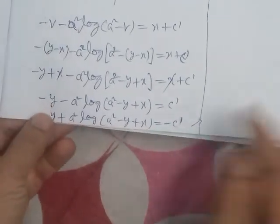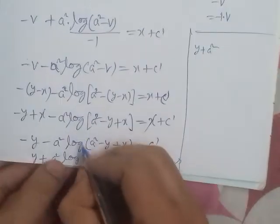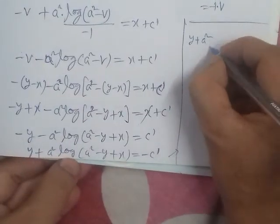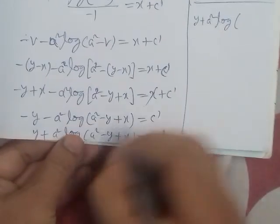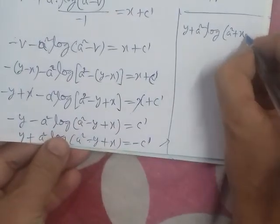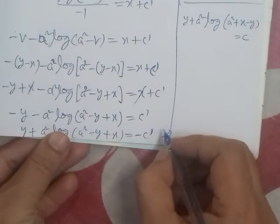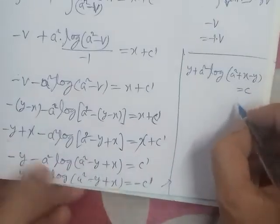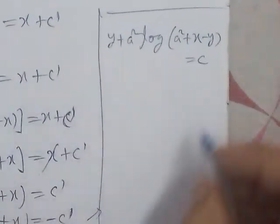Left hand side changes: y plus a square. Here we change the calculation and solve: a square x plus x plus x plus y plus right hand side. This is the problem complete. Thank you very much. Wa akrut dawana alhamdulillahi rabbil alameen.